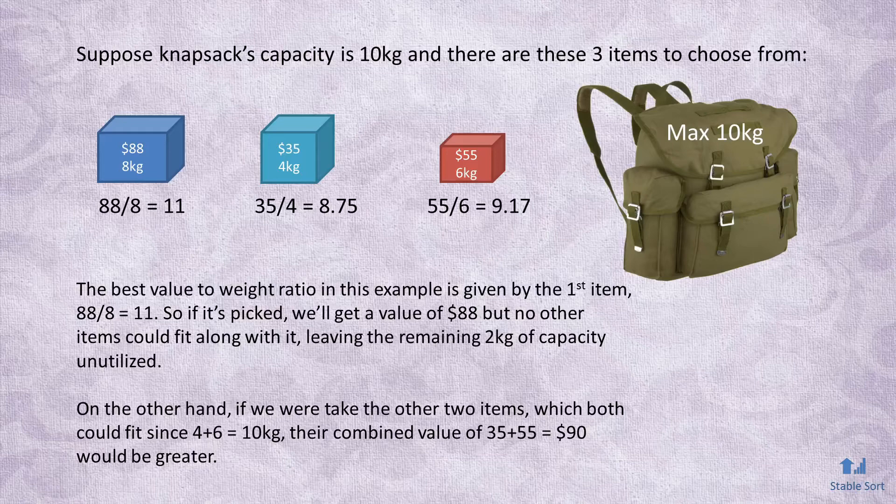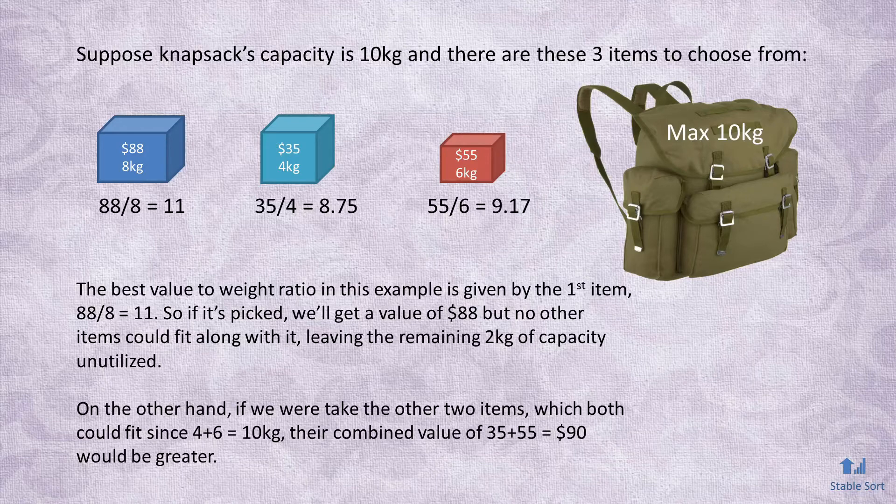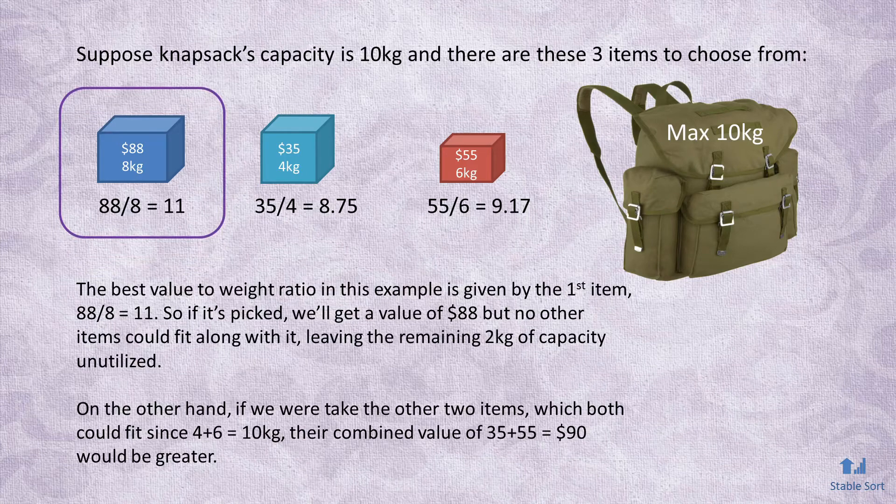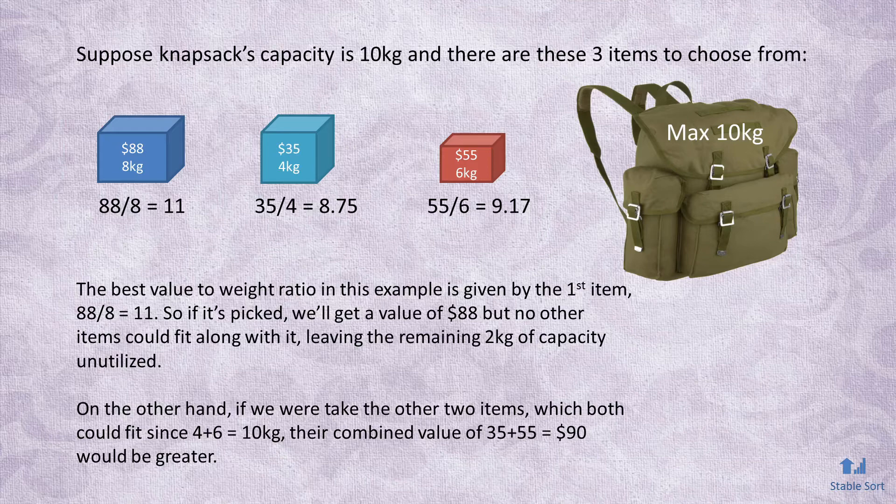Here's a simple example. Suppose knapsack's capacity is 10 kilograms and there are these three items to choose from. The best value-to-weight ratio in this example is given by the first item, 88 over 8 is 11. So if it's picked, we'll get a value of 88, but no other items could fit along with it, leaving the remaining 2 kg of capacity unutilized.